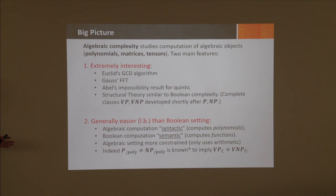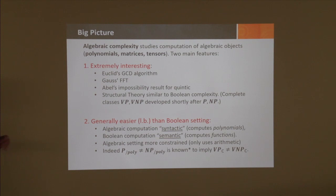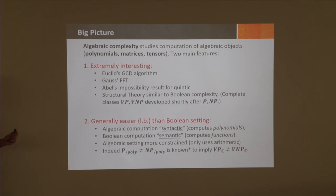The second point is that lower bounds are generally much easier to prove than in the Boolean setting. One feature is that algebraic computation is syntactic—it computes polynomials—whereas Boolean computation is more semantic. You want to compute the Boolean function independent of its representation. In the algebraic setting we're more constrained; we can only use arithmetic operations.